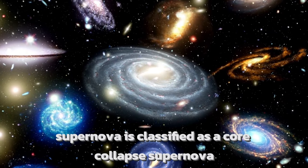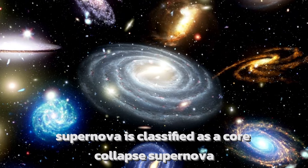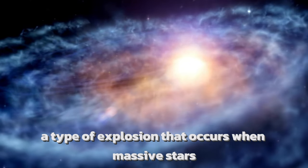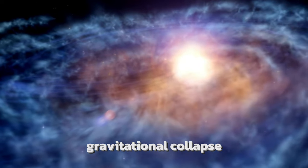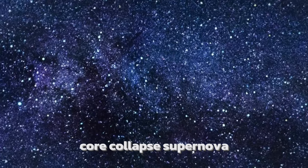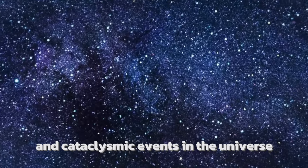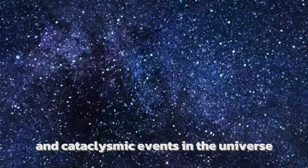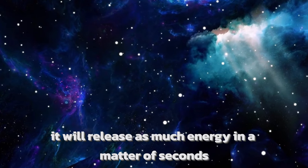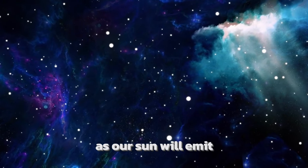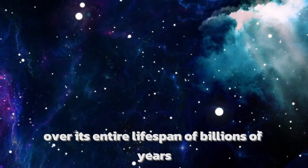Betelgeuse's impending supernova is classified as a core-collapse supernova, a type of explosion that occurs when massive stars exhaust their nuclear fuel and can no longer support their own gravitational collapse. Core-collapse supernovae are among the most energetic and cataclysmic events in the universe. When Betelgeuse eventually goes supernova, it will release as much energy in a matter of seconds as our sun will emit over its entire lifespan of billions of years.